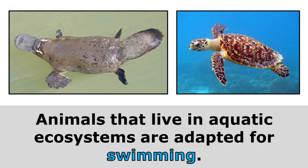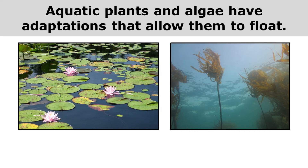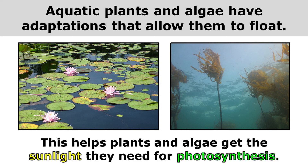Animals that live in aquatic ecosystems are adapted for swimming. They might have webbed feet or flippers that help them move through the water. Aquatic plants and algae have adaptations that allow them to float, which helps them get the sunlight they need for photosynthesis.